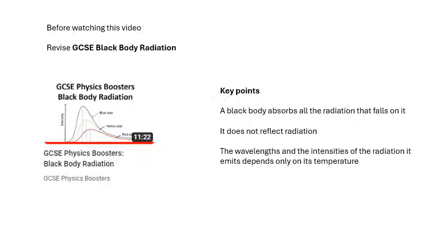And the wavelengths and the intensities of the radiation it emits depends only on its temperature. So we get this spectrum of radiation which it emits, and the shape of the spectrum and whereabouts the peak is depends on the temperature.